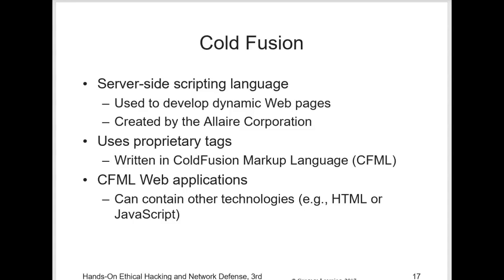White list validation is another approach you can take. White list validation is the practice of only accepting input that is known to be good — it's on a white list. This can involve validating compliance with expected type, length, size, range, number format, and other standards before accepting input for further processing. For example, when you validate that an input value is a credit card number, this may involve validating that it contains only numbers, is between 13 and 16 digits long, and passes the Luhn formula — L-U-H-N — a formula for calculating the validity of a number based on the last check digit of the card.